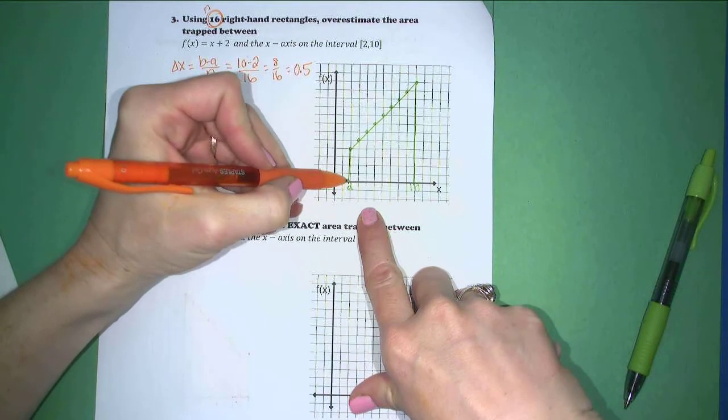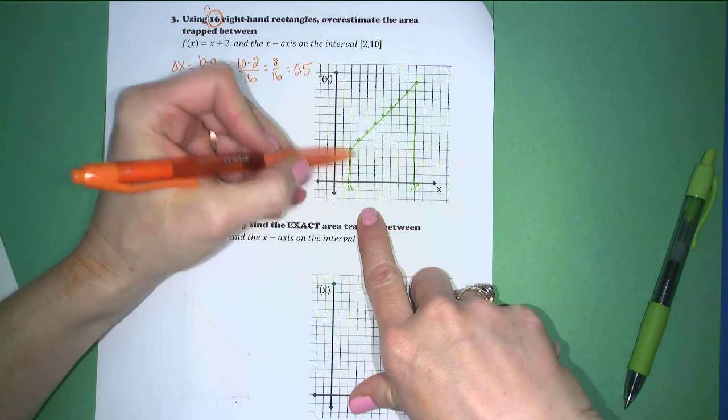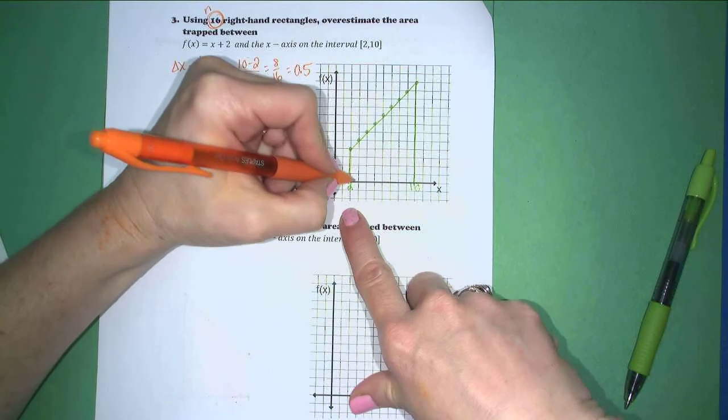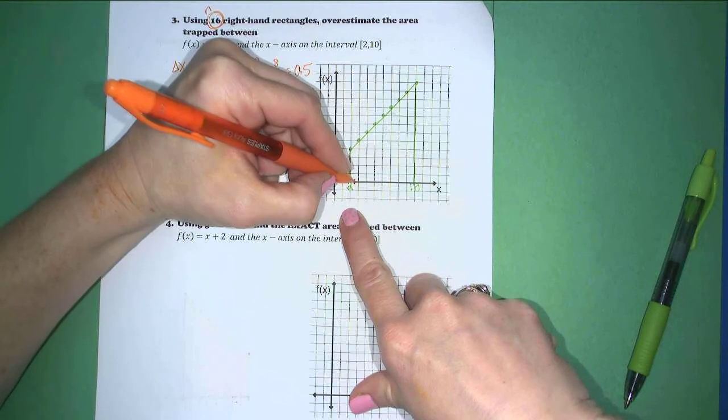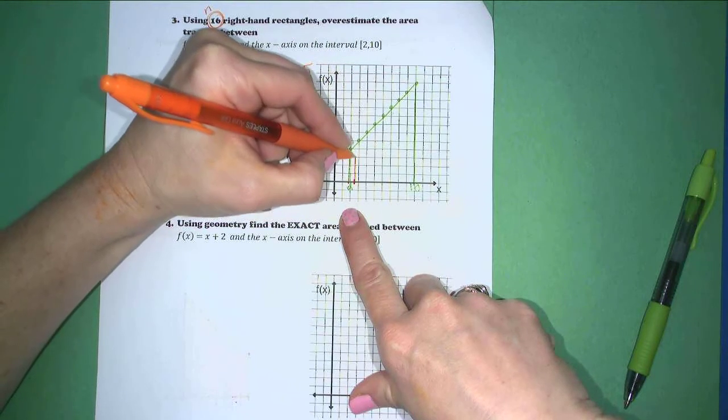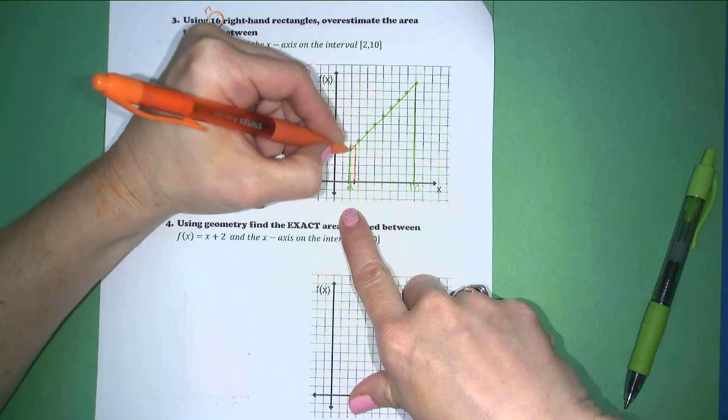the interval will no longer be 2 to 3, the base of my first rectangle will run from 2 to 2.5. So I will grab my height at 2.5, I'll come up to the function, hit it, come across, and down.